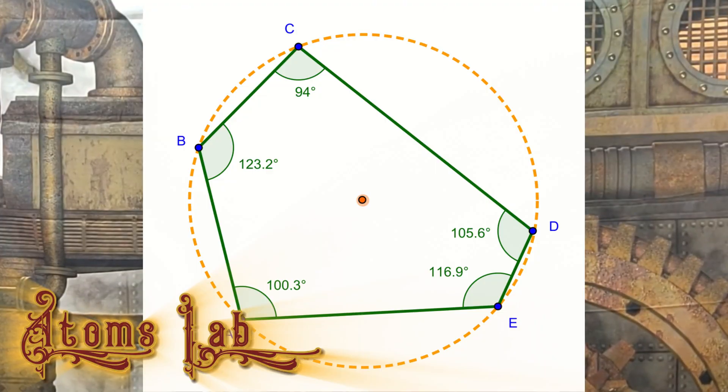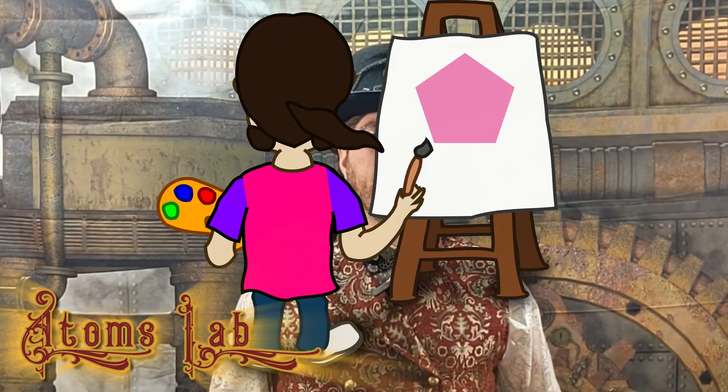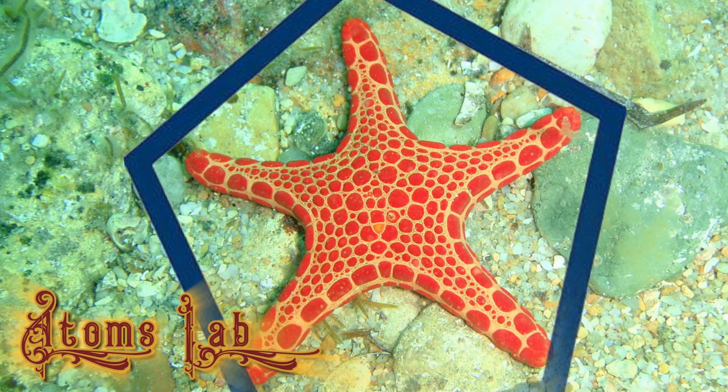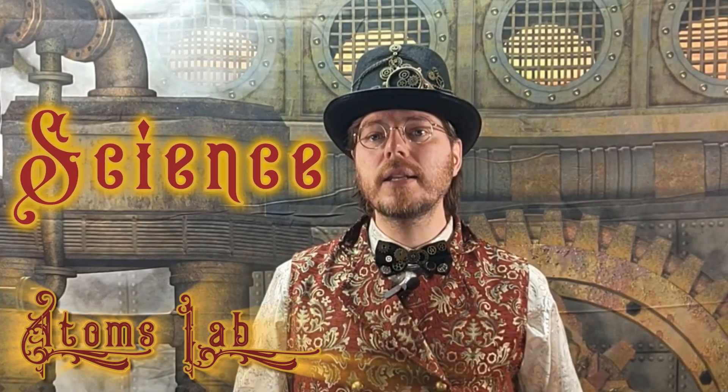Pentagons are pretty cool because they show up in all sorts of places. You'll find them in math problems, buildings, paintings, even nature. Like, have you ever seen a starfish? They're like a living pentagon! So next time you see a pentagon, take a moment to appreciate its unique shape and all the different places it can be found. And remember, it's all thanks to science that we can understand these cool shapes. Can you find any pentagons?